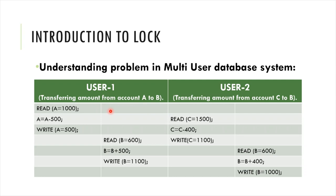At the same time, User 1 accesses data of B. Read B = 600. Now B = B + 500, so B = 600 + 500 = 1100. After this write operation is performed, User 2 again reads B = 600.